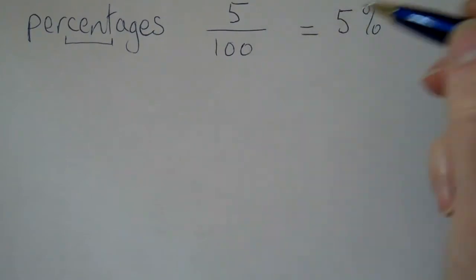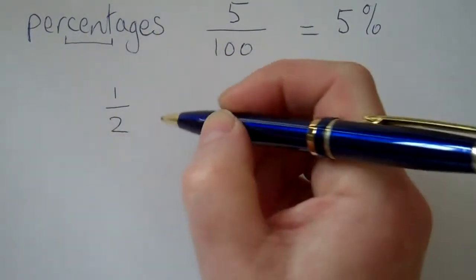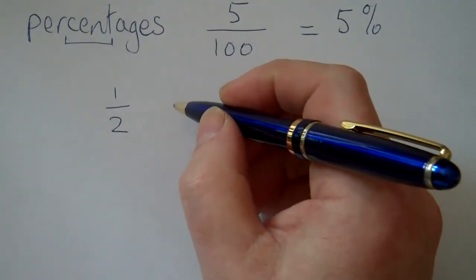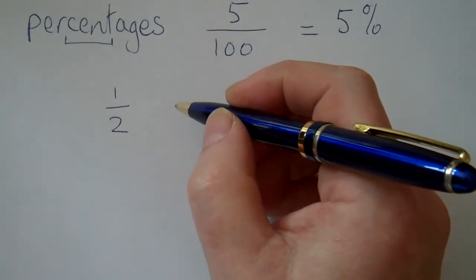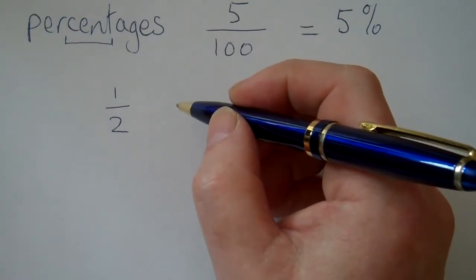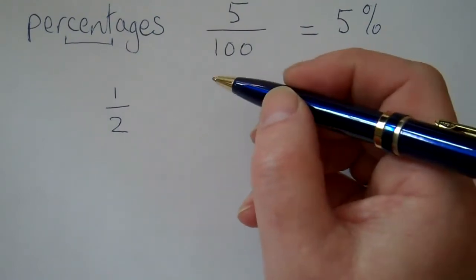Some percentages you're probably already familiar with. For example, we know that a half is often converted into fifty percent. So if you said that half of the people in a room were taller than five foot, then you could say fifty percent of the people in the room were taller than five foot.